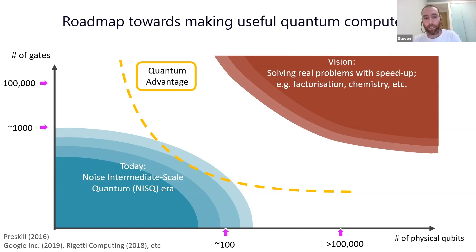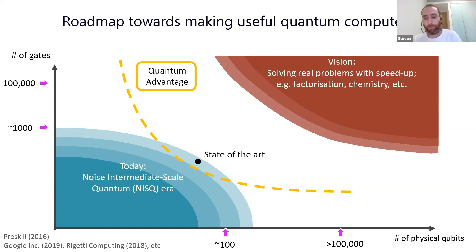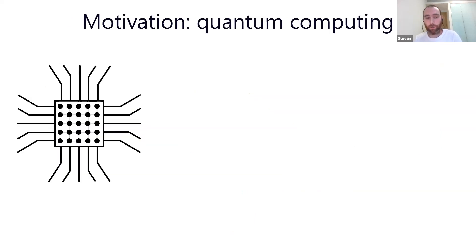The goal is to move to the top right corner where a quantum computer would be able to solve real problems with a real interest and a speedup — for example, factorization, search algorithms, chemistry simulations, etc. Between these two regions there is a white region called the quantum advantage boundary, where what we can do with a quantum computer cannot be simulated classically but also cannot yet solve any practical problem.